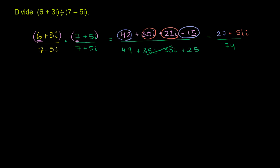And I want to write it in the form of a plus bi, the traditional complex number form. So this right over here is the same thing as 27 over 74 plus 51 over 74 times i.